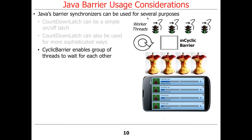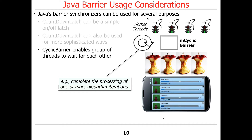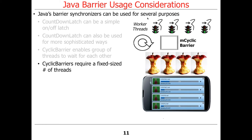Cyclic barriers are about threads. So if countdown latches are about events or actions, a cyclic barrier is about groups of threads waiting for each other to reach a certain point. It's typically used for algorithms with cycles where you do a bunch of processing in one phase, let everybody reach a stopping point, then start all over again on the next phase. The key thing to remember is cyclic barriers require a fixed-size number of threads — whereas with countdown latches, you don't necessarily need a fixed-size number of threads.